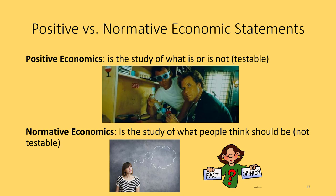It's important to know this difference because a lot of people make statements as if they're positive facts, when in reality they're based on opinion. For example, a positive statement might be: it's 82 degrees outside — we can test that. A normative statement might be: it's too hot outside. Being too hot is a matter of opinion or personal preference; it's not testable. You can test whether it's 82 degrees, but you can't test whether it is too hot outside.